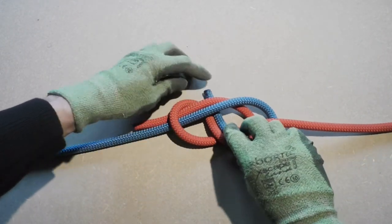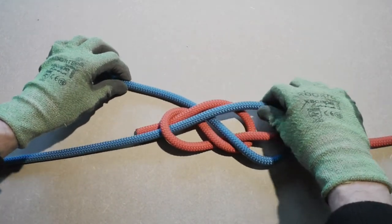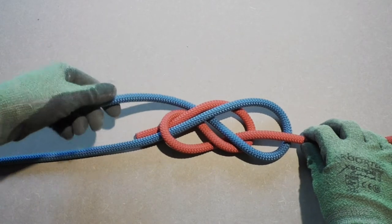The Figure 8 Bend is a very safe and stable bend, and it can be used in climbing. The disadvantage of this knot is that it's very bulky.